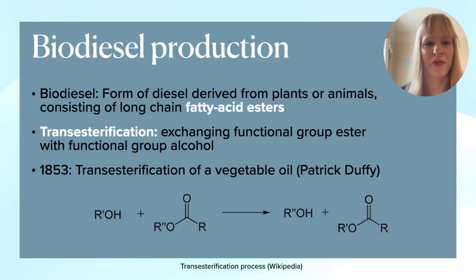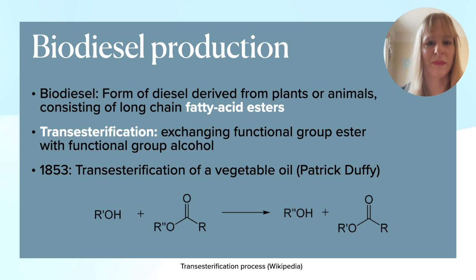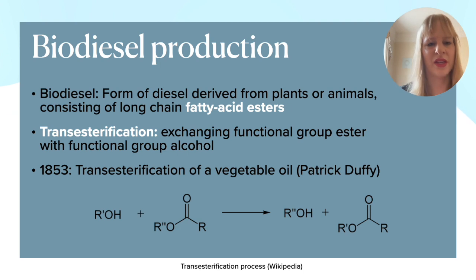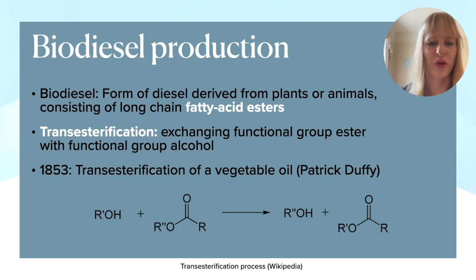Let's first have a look at what biodiesel is. This is different from the diesel that you can traditionally get at pumps, but biodiesel is gaining in popularity. It's a form of diesel derived or produced from plants or animals, and it consists of long-chain fatty acid esters. It's produced with a process called transesterification, which means that you're exchanging the functional group of the ester with the functional group of the alcohol. If you look at the process below, you see the OH, which is the alcohol, and then you see the ester group next to it, and the R groups are swapped around.